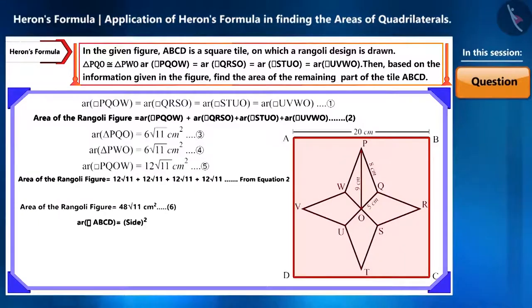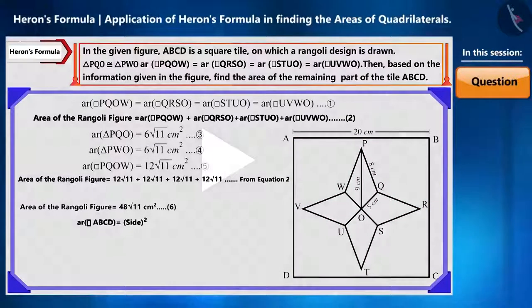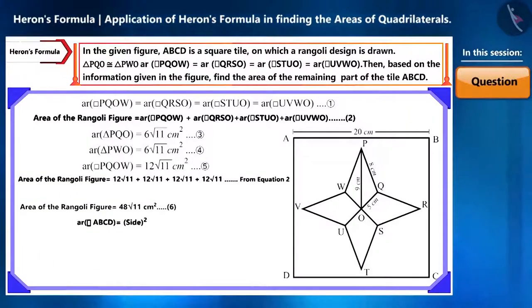And now let's find the area of the square tile ABCD. Friends, pause the video and solve it yourself. Here you can check your answer. We obtained it as 400 cm².